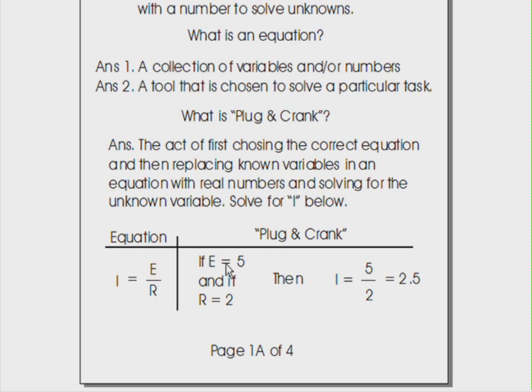But if we know that e equals five, and if we also know that r equals two, now this equation becomes valuable. It becomes a tool. It's a tool that can help us resolve what i equals. So the plug and crank part is where we've selected the correct equation we're trying to solve for current, which is i. We plug in the five and the two into the equation and we crank out the answer. i equals five divided by two, which equals 2.5. That's what we mean by plug and crank.